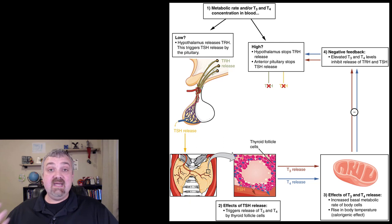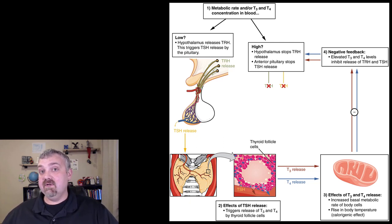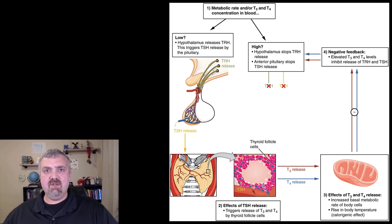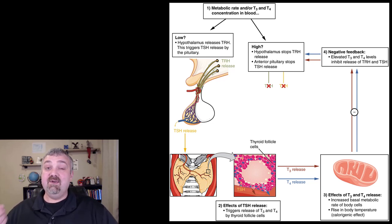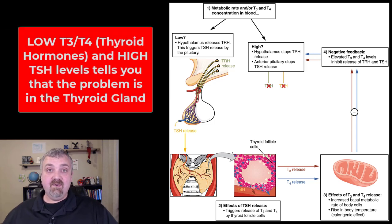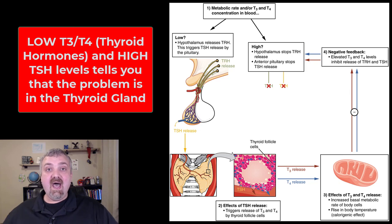We can use this when diagnosing thyroid conditions. If someone has hypothyroidism, you'd want to know: is the problem in the pituitary gland or is it in the thyroid gland? You can tell by looking at the lab results. If someone has low T3 and T4 levels, you know they have hypothyroidism — they're not producing enough thyroid hormone. The typical hypothyroid person will have low T3 and T4 levels but high TSH levels — thyroid stimulating hormone.